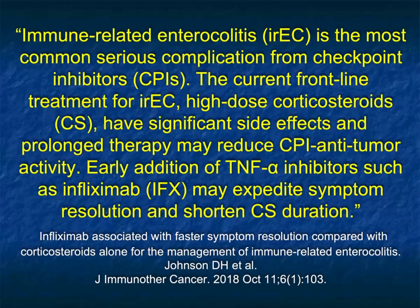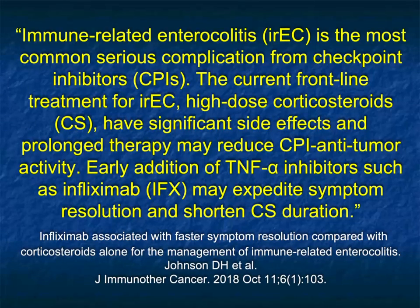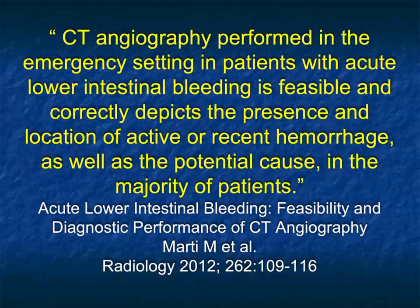This patient was on checkpoint inhibitors, and that was the colitis from checkpoint inhibitors — CPI — with active bleeding in multiple sites. Immune-related enterocolitis is the most common serious complication from checkpoint inhibitors, which are the current frontline treatment for a range of tumors. High-dose corticosteroids can be used to treat it but have side effects. In patients on immunotherapy or any chemotherapy, always think about active GI bleeding.